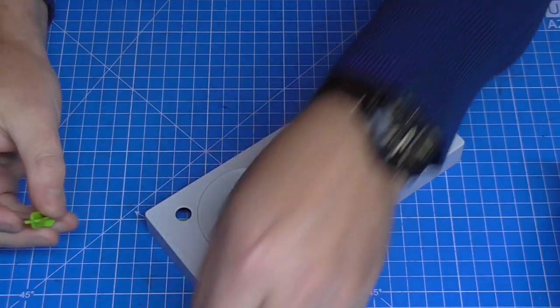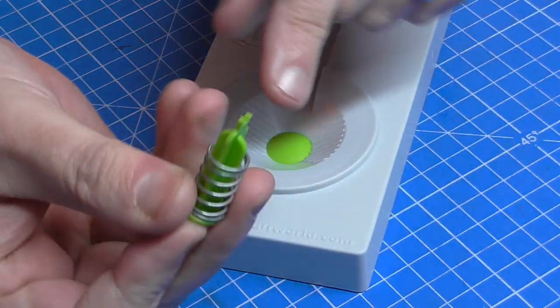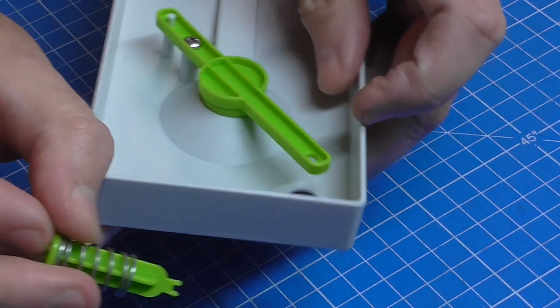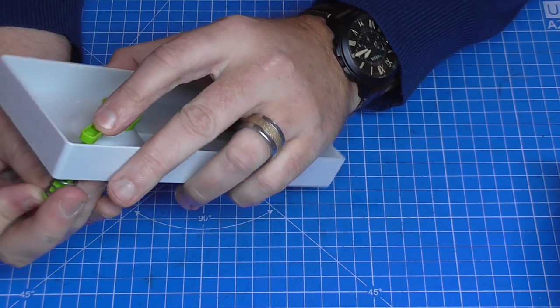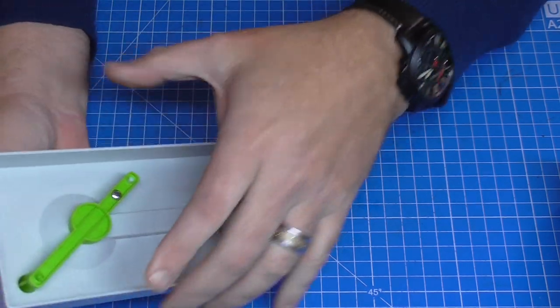All that's left to do then is just to put this plunger in. So simple to actually make, but on the end of this button we do have a little fork. That's just going to clip into the circle we've got there. So I'm going to put that through this side, line it up.